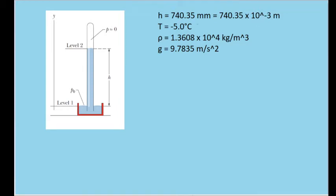The temperature is negative 5.0 degrees Celsius, at which the density of mercury is 1.3608 times 10 to the fourth kilograms per cubic meter. The acceleration due to gravity at this point on Earth is 9.7835 meters per second squared.